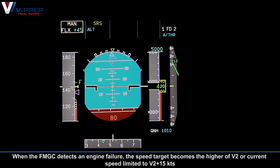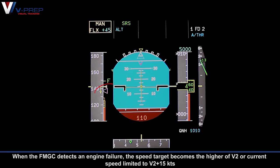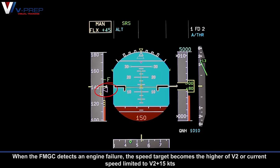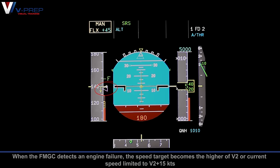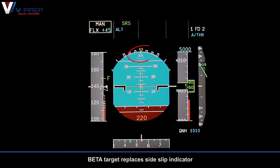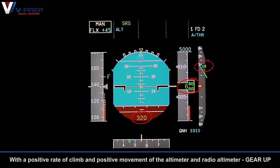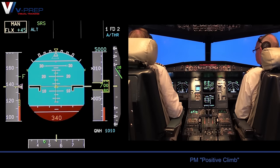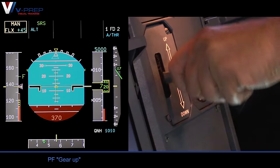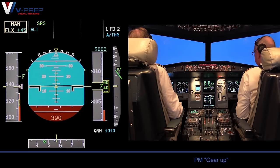When the FMGC detects an engine failure, the speed target becomes the higher of V2 or current speed, limited to V2 plus 15 knots. Beta target replaces the sideslip indicator. With a positive rate of climb and positive movement of the altimeter and radio altimeter, gear up.